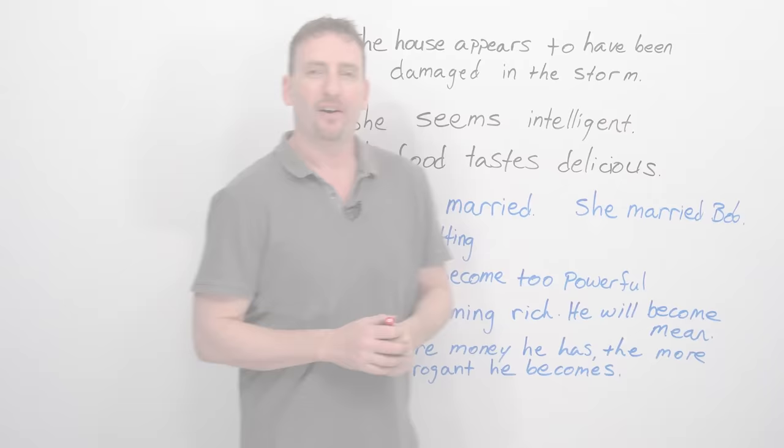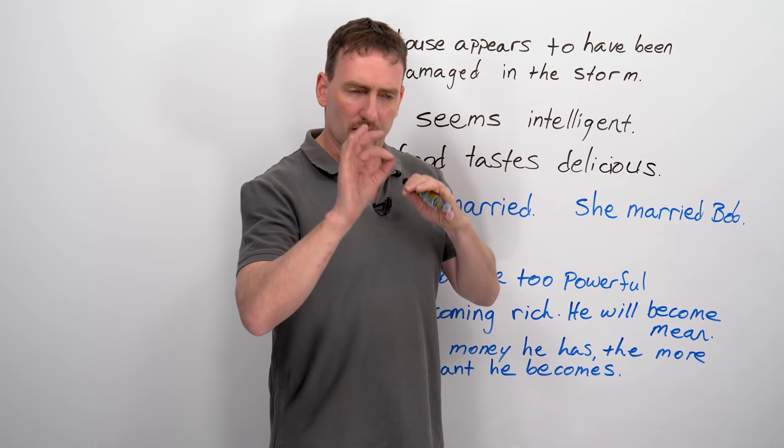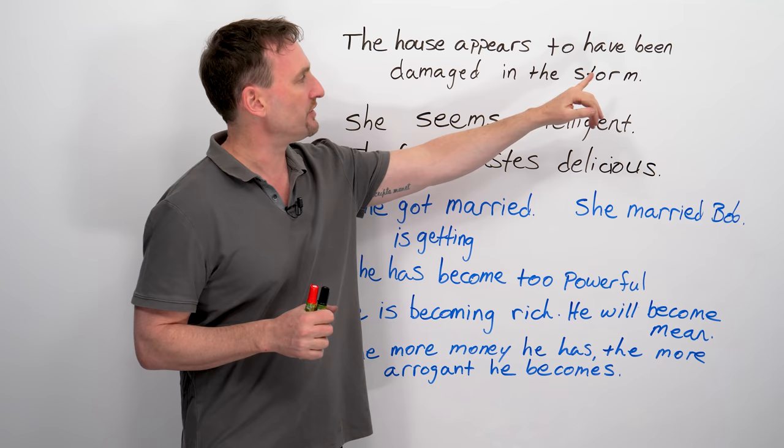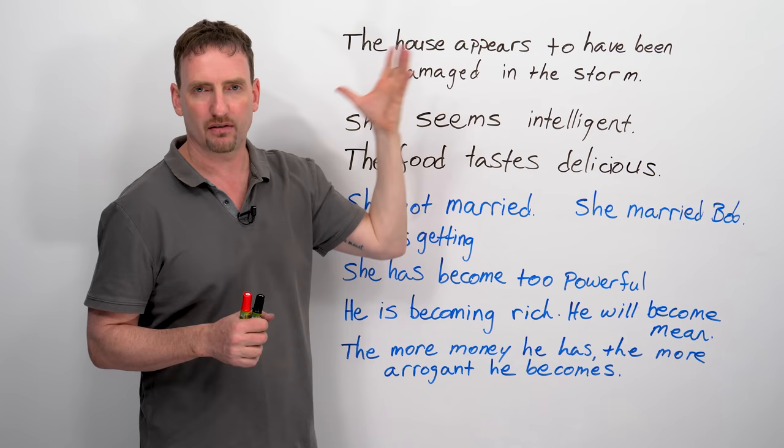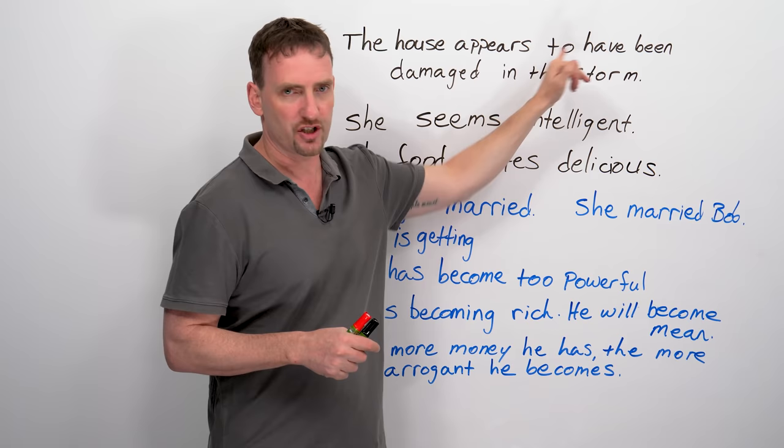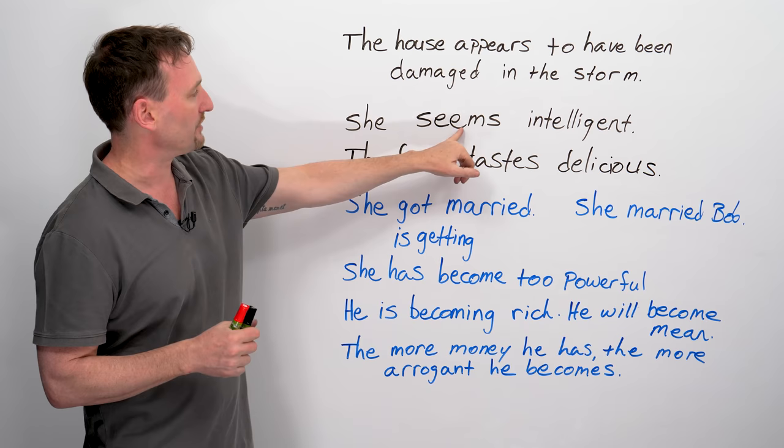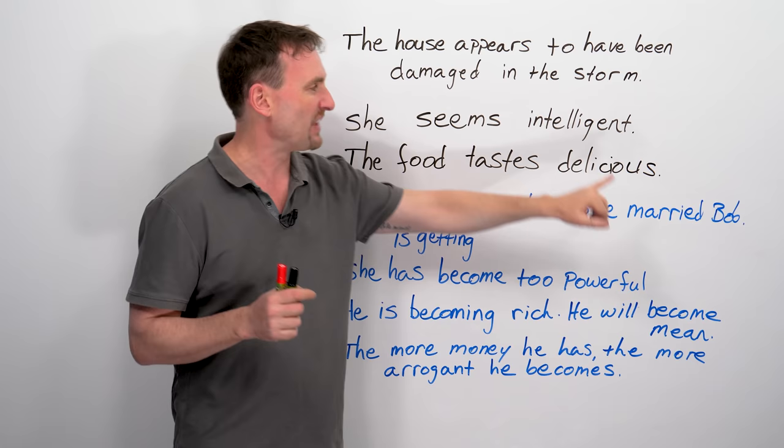So now we're going to look at a few more examples and notice a few more specific grammatical points. The house appears to have been damaged in the storm. So right away you notice that I have the option of using copula verbs in passive situations as well. You just have to adjust according to the time, according to the situation. Here I just want to point out a couple of other things. She seems intelligent and the food tastes delicious.